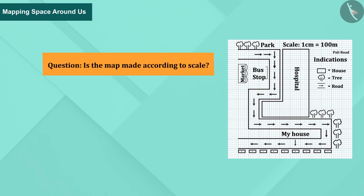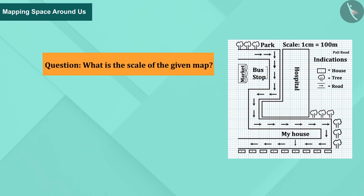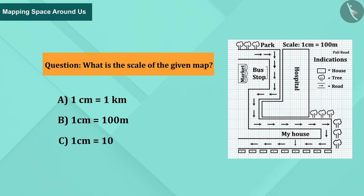Question: Is the map made according to scale? A) it is made according to scale, B) it is not made according to scale, or C) don't need scale. This map is made according to scale. Question: What is the scale of the given map? A) 1 centimeter equals 1 kilometer, B) 1 centimeter equals 100 meters, or C) 1 centimeter equals 100 centimeters. As you can see here, the scale of the map is 1 centimeter equals 100 meters.